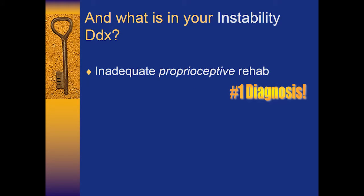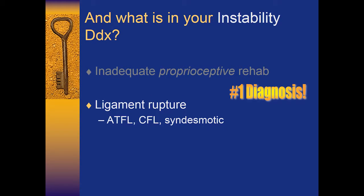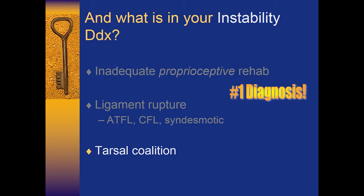Applying the two key questions to our case: is history, physical, and x-rays consistent with ankle sprain? Yes. Has he done adequate triple therapy rehab? Absolutely not. So we want six weeks of good triple therapy rehab — maybe get him to a PT — and re-evaluate in six weeks. At that point, if after 12 weeks he's still not better, consider MRI. If the ankle sprain diagnosis no longer fits, consider other diagnoses: missed fracture, osteochondral defect, talar dome injury, tendon issues, medial or high ankle sprain, or bifurcate ligament sprain. For instability complaints, the number one cause is inadequate proprioceptive rehab, but also consider ligament rupture or tarsal coalition.